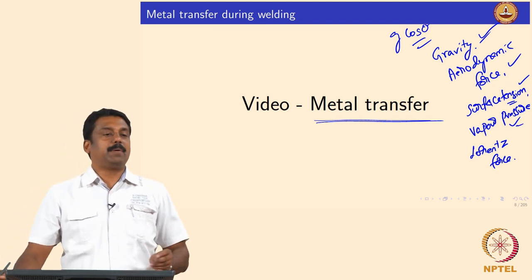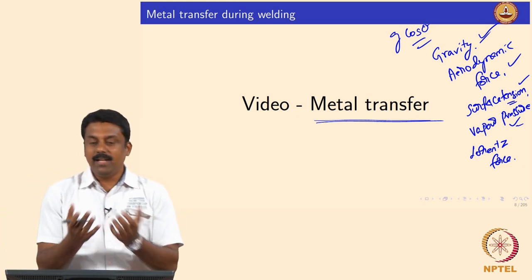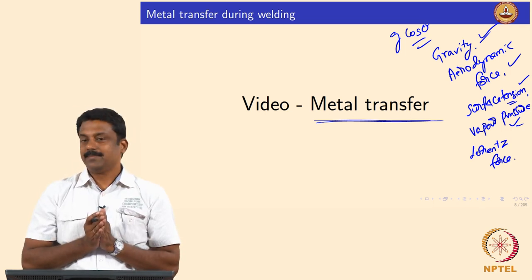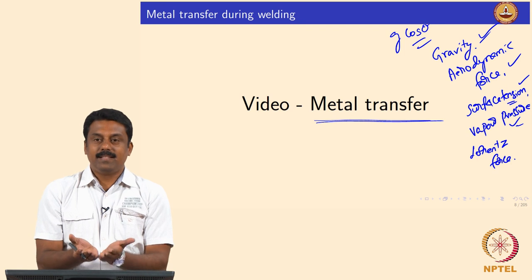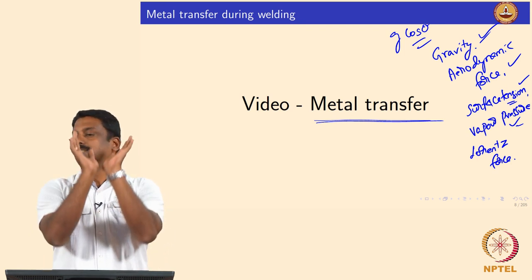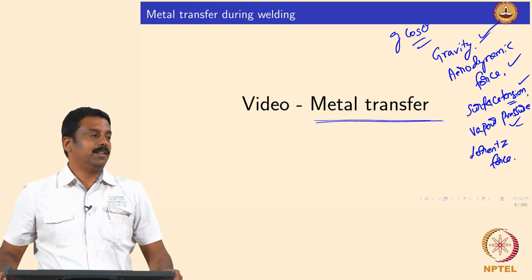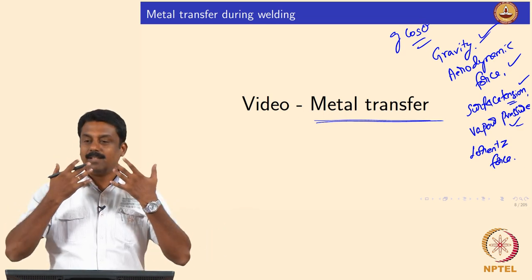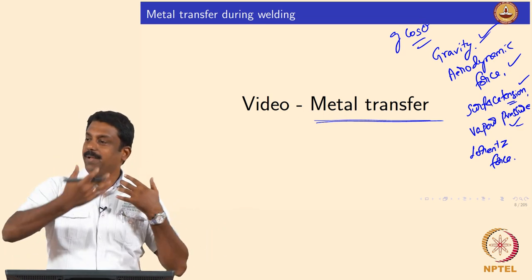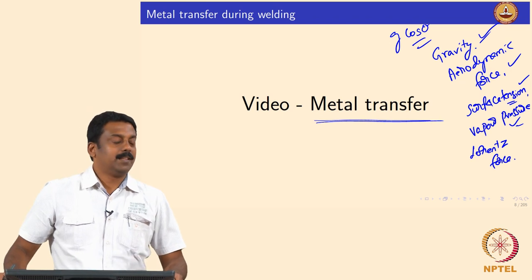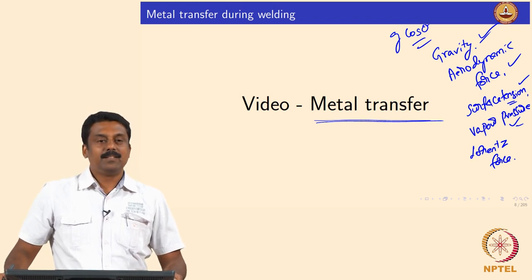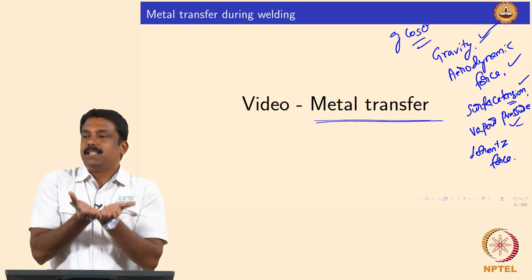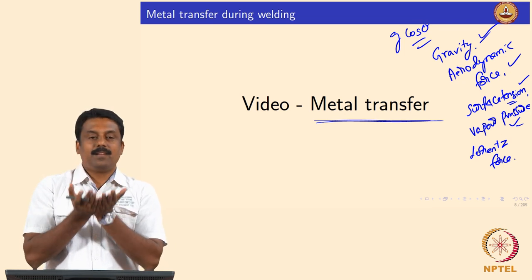The vapor pressure: during welding we also create metal vapors which go upward — the melt pool vaporizes and goes up. This will always push the droplet to stay in its position. So the vapor pressure coming from the melt pool would always resist the detachment.